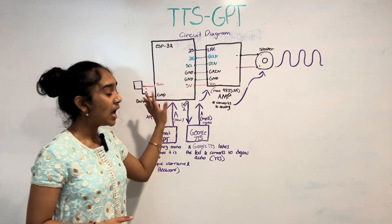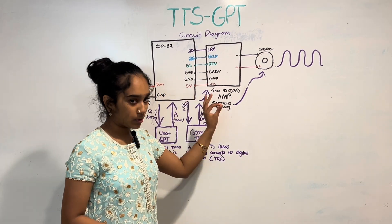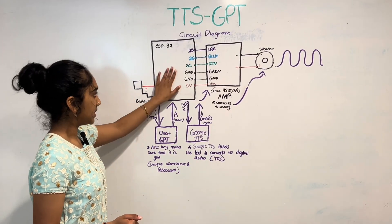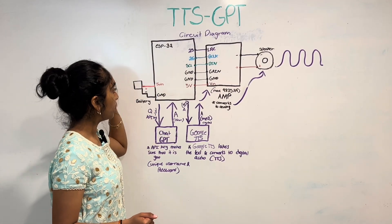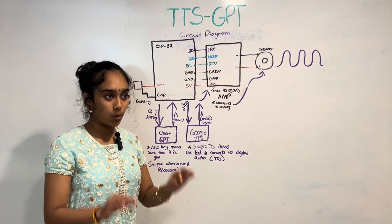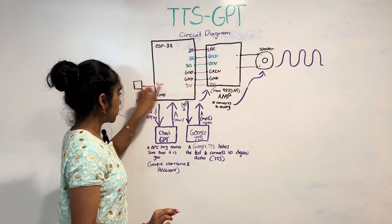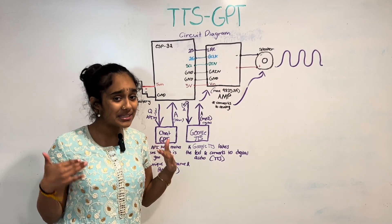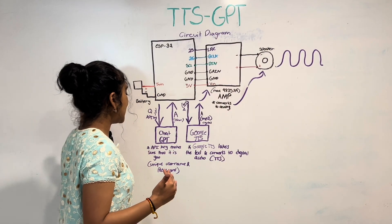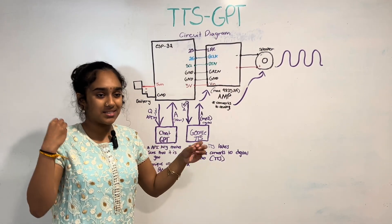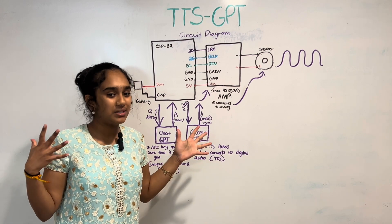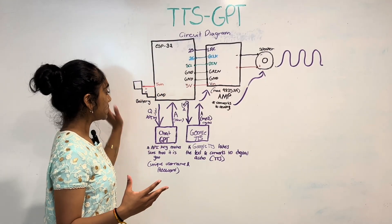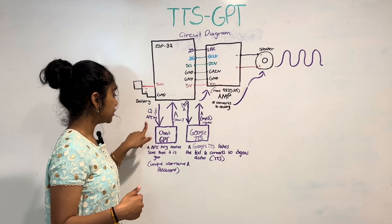Here's the entire circuit diagram. As you can see, it follows a really similar structure with similar components — just a bunch of additional steps. Obviously we have the battery and the ESP32, which stays the same. When we type a question into the computer, the ESP32 sends the question and the API key. An API key sounds fancy but it's actually simple — it's kind of like a secret unique username and password.